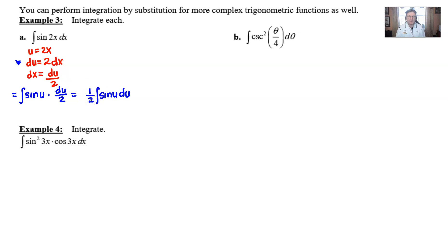To finish this off, the antiderivative of sine is negative cosine, so we have the negative that floats out to the front with the one-half, and then we put u here plus c. We could go ahead and just back substitute our u and change it to 2x.